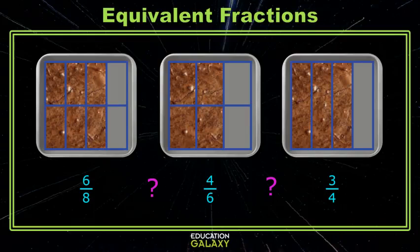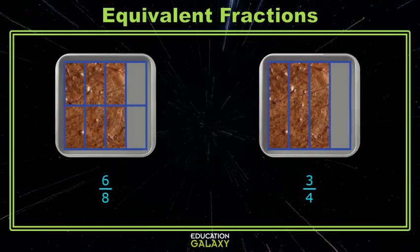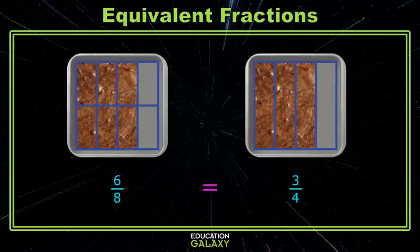And the one in the middle looks like it has more blank space. So I think the one on the left and the one on the right are equivalent and the one in the middle is not. It looks like less brownie there. So six eighths and three fourths are equal. They're equivalent fractions.